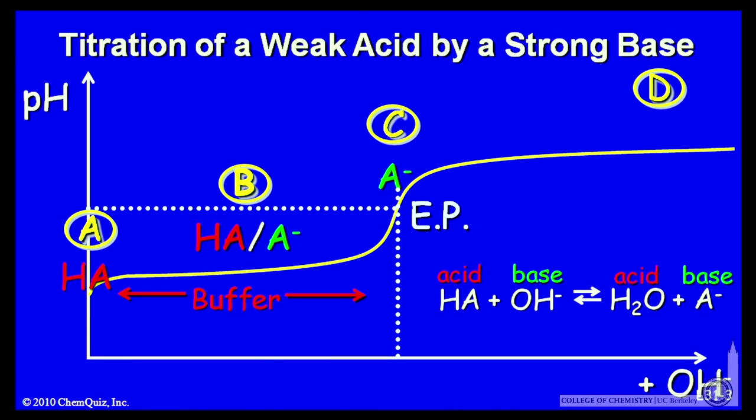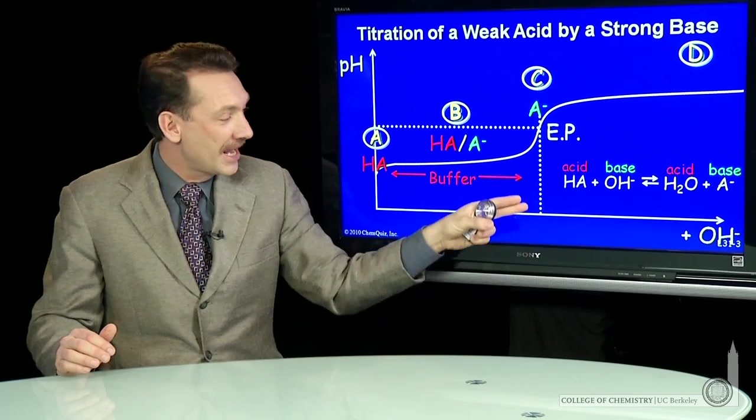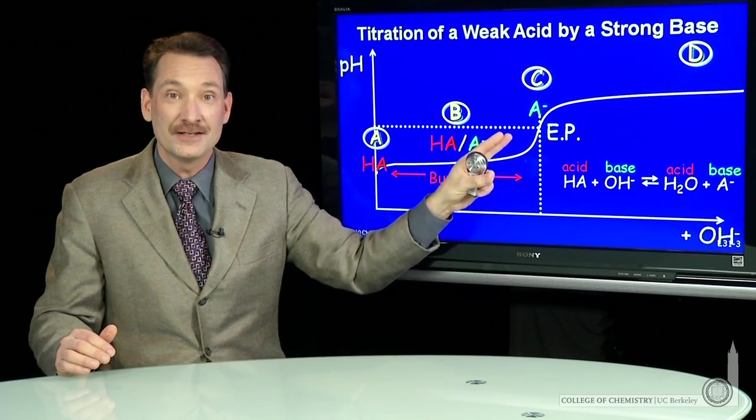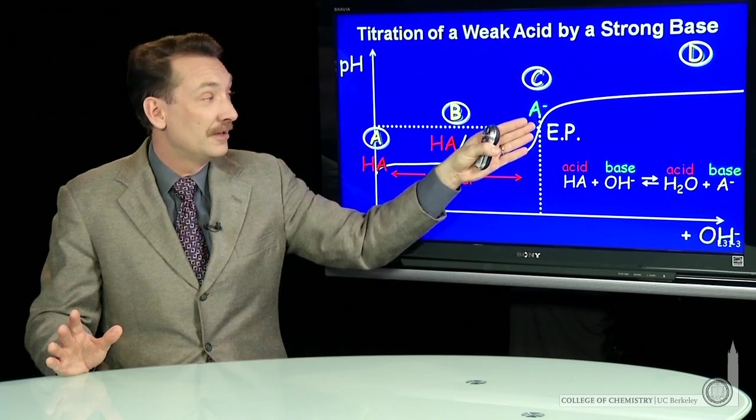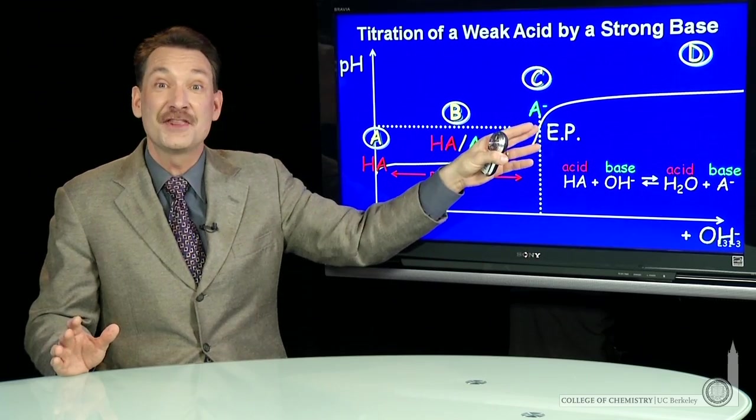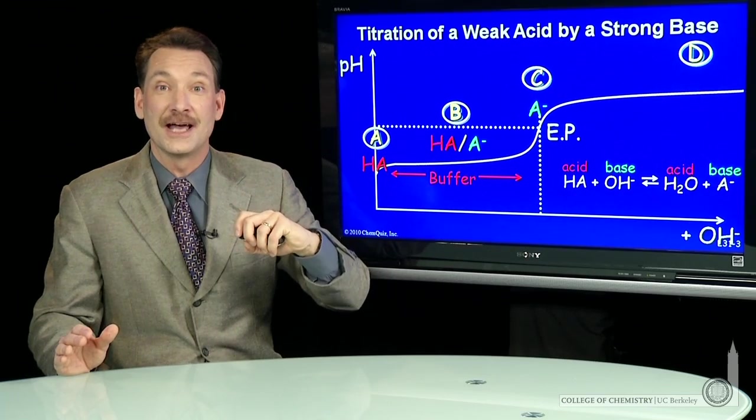At point C, we've converted all the HA into A minus by adding a mole of OH minus for every mole of HA. This is the endpoint, also called the equivalence point or stoichiometric point—all different names for when you've added one mole of base for every mole of acid originally present.